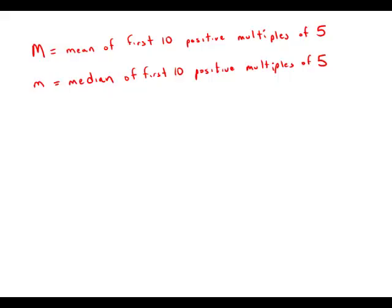If m is the average of the first 10 positive multiples of 5 and capital M is the median of the first 10 positive multiples of 5, what is the value of capital M minus lowercase m?